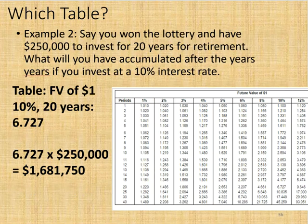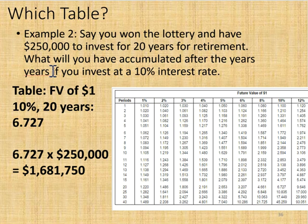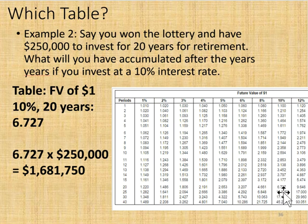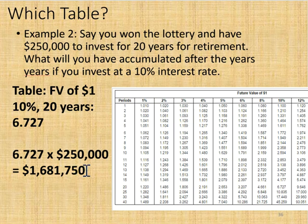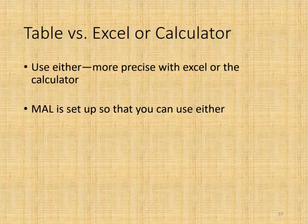Another example: say you won the lottery and have $250,000 to invest for 20 years for retirement. If you invest at a 10 percent interest rate, look up the future value of a dollar table at 10 percent for 20 years — the factor is 6.727. Multiply 6.727 by $250,000 and at the end of 20 years your $250,000 will be worth $1,681,750.